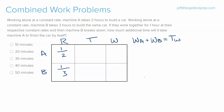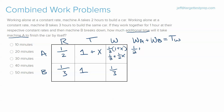Both machines work together for one hour, so machine B's time is one hour — it stops there. Since we need the additional time for machine A, we set machine A's total time as one plus x hours. Multiplying across, machine A's work is one-half times (one plus x), which expands to one-half plus one-half x. Machine B's work is one-third. We add work of A plus work of B.